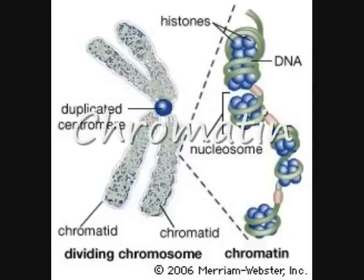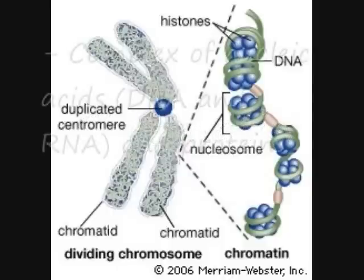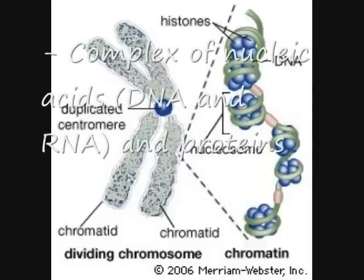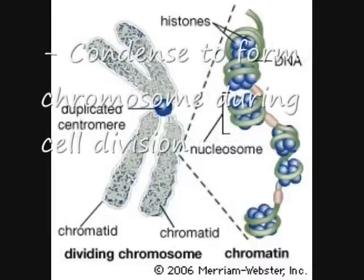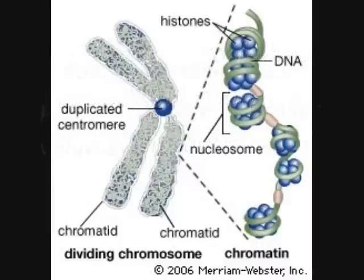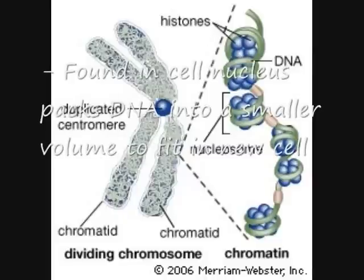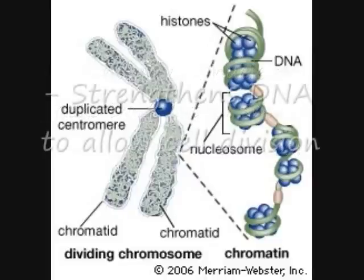Chromatin is a complex of nucleic acids — DNA and RNA — and proteins that condense to form a chromosome during cell division. Found in the cell nucleus, it packages DNA into a smaller volume to fit in the new cell. It also strengthens the DNA to allow mitosis, which is cell division.